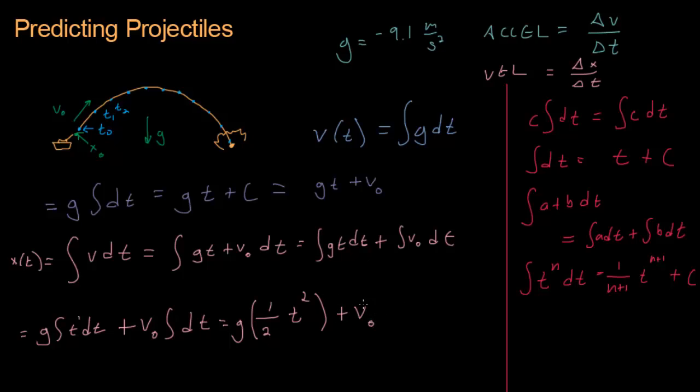We have v naught times this t. We have an integral dt. That's the same thing as t plus a constant of integration. We don't know what the constant of integration is yet, so we can just combine them. But if we think about it, just like when we were trying to find the velocity, our constant of integration was the initial velocity. Now we're trying to find the position. So our constant of integration will be the initial position.